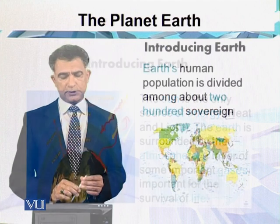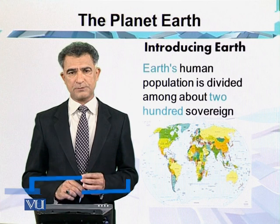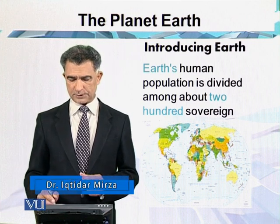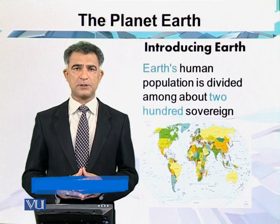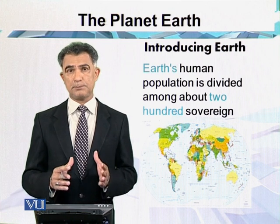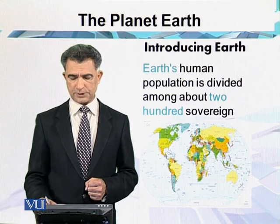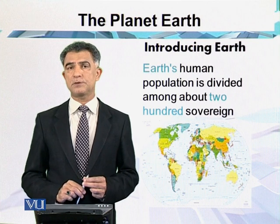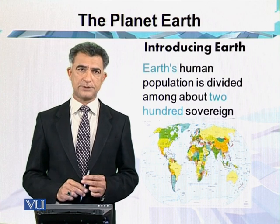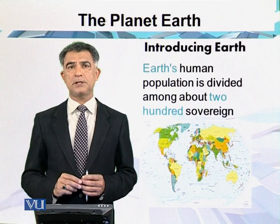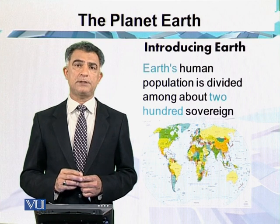The Earth's human population is divided among about 200 sovereign countries. Every country has its own boundary, so certain areas are under certain governments. For example, in South Asia you have eight countries: Afghanistan, Pakistan, Bharat, Bangladesh, Sri Lanka, Maldives, Bhutan, and Nepal.